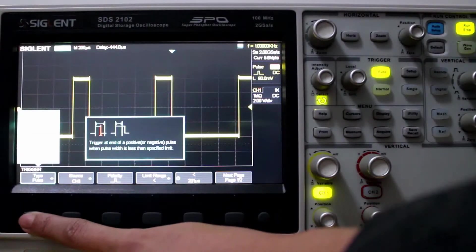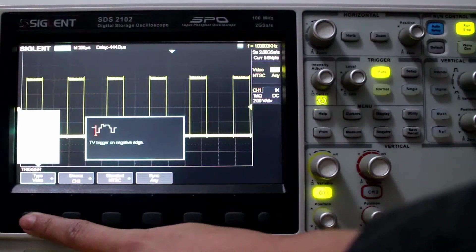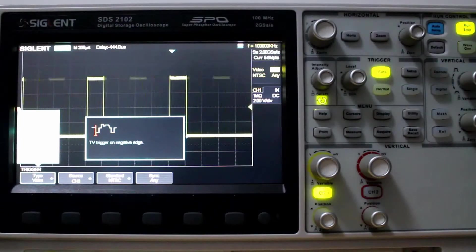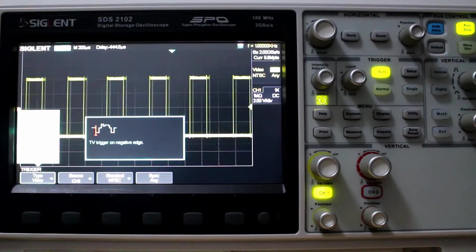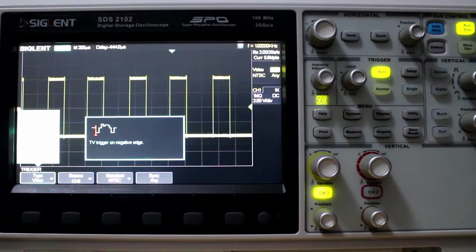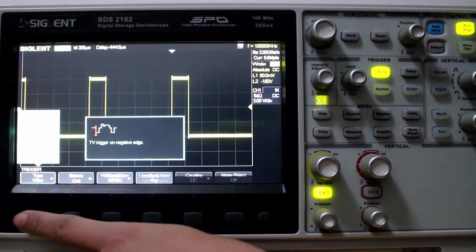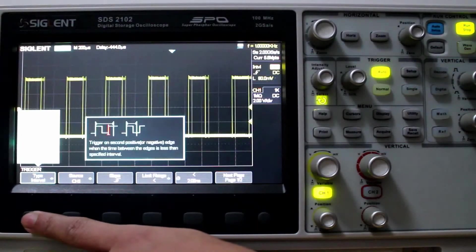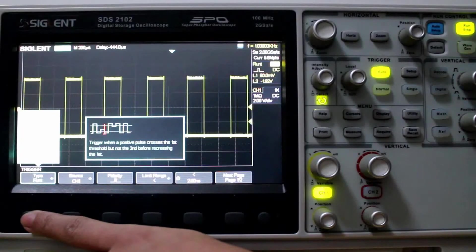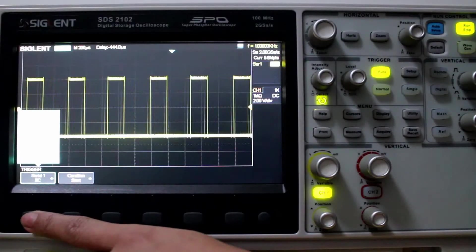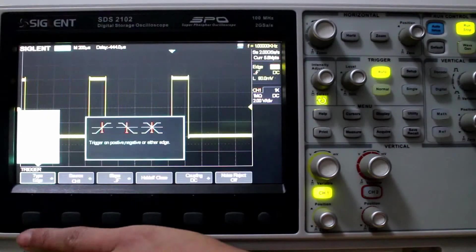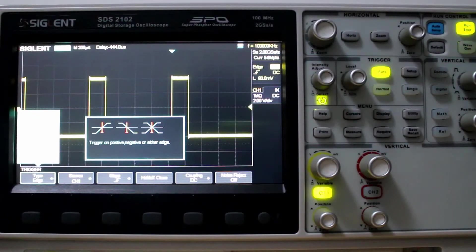Next we have video. I don't have a video generator at the moment, so we'll do that video another day. And the next trigger type is window. Then interval. Dropout. Runt. And pattern. And Serial one. Serial two. And we'll look at those another day in the future on the next videos. Thanks for watching.